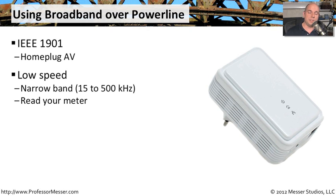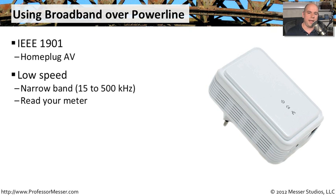There are different types of speeds used. One example is a low speed, which uses a very narrow band between 15 to 500 kilohertz — a very low frequency. It's very often used by the power company to read your meter without having to visit your house. It used to be that everyone would visit your home and read the meter on the outside, but today the meters are all digital and they can use this BPL, broadband over power line networking technology, at these low frequencies to read exactly what's on the meter right outside your house.